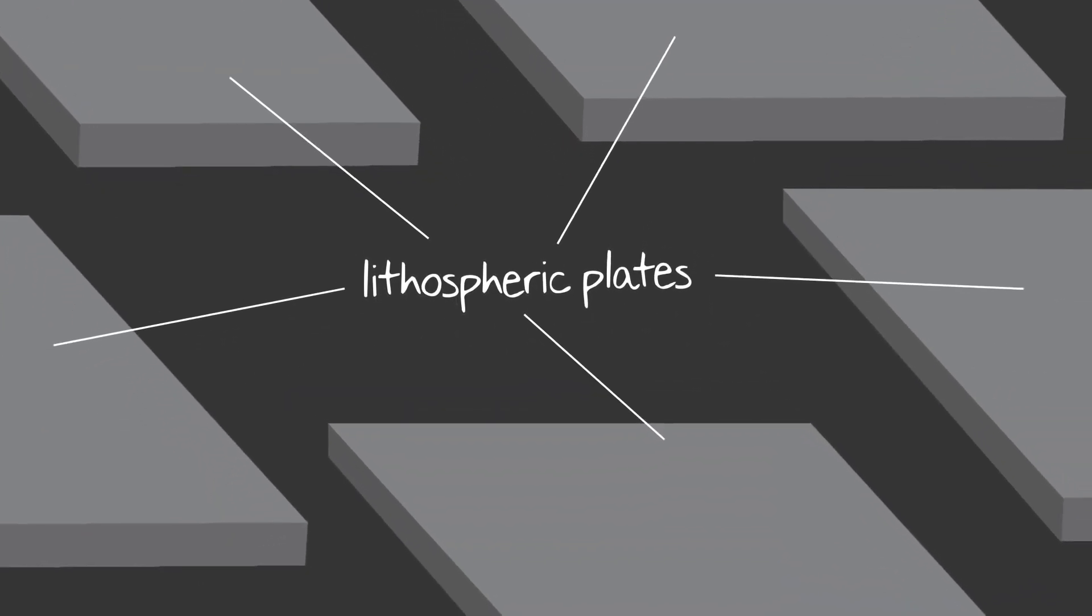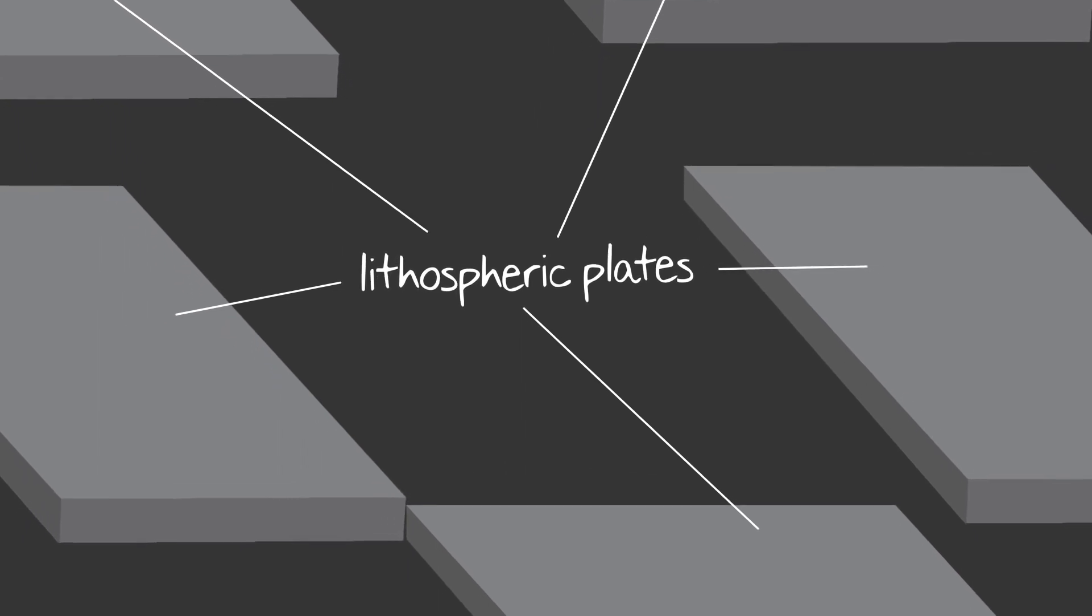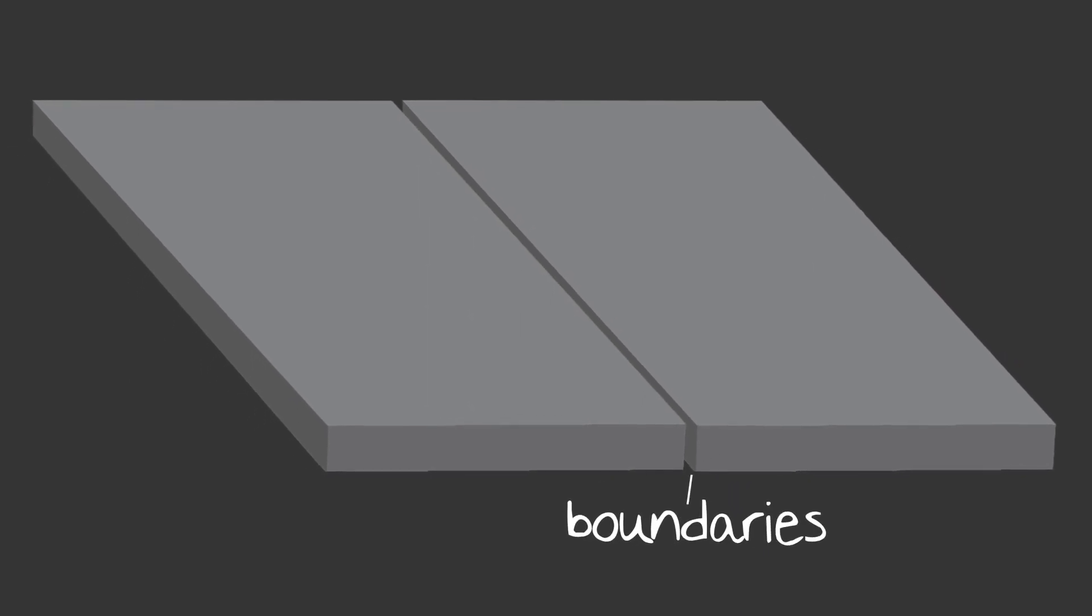So now that we know the history, let's dive a bit deeper into how it all works. According to the plate tectonics theory, these massive lithospheric plates are all moving in different ways, and how they interact with one another can have a huge impact on the Earth. Where these plates meet are called boundaries, and there are three kinds.